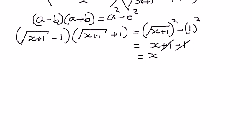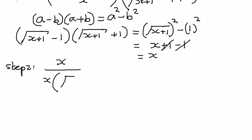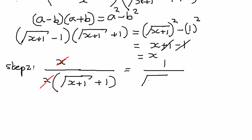Now we're going to write the second step here. We're going to rewrite that as x divided by x times the square root of x plus 1, plus 1. We can simplify it some more — there is an x in the numerator and an x in the denominator, so this simplifies to 1 over the square root of x plus 1, plus 1.